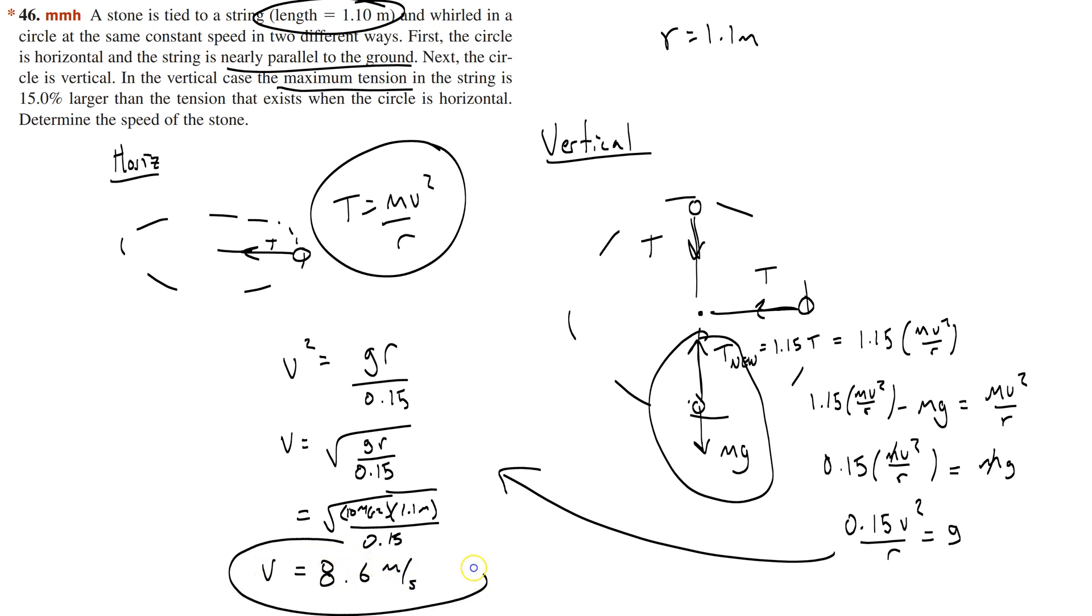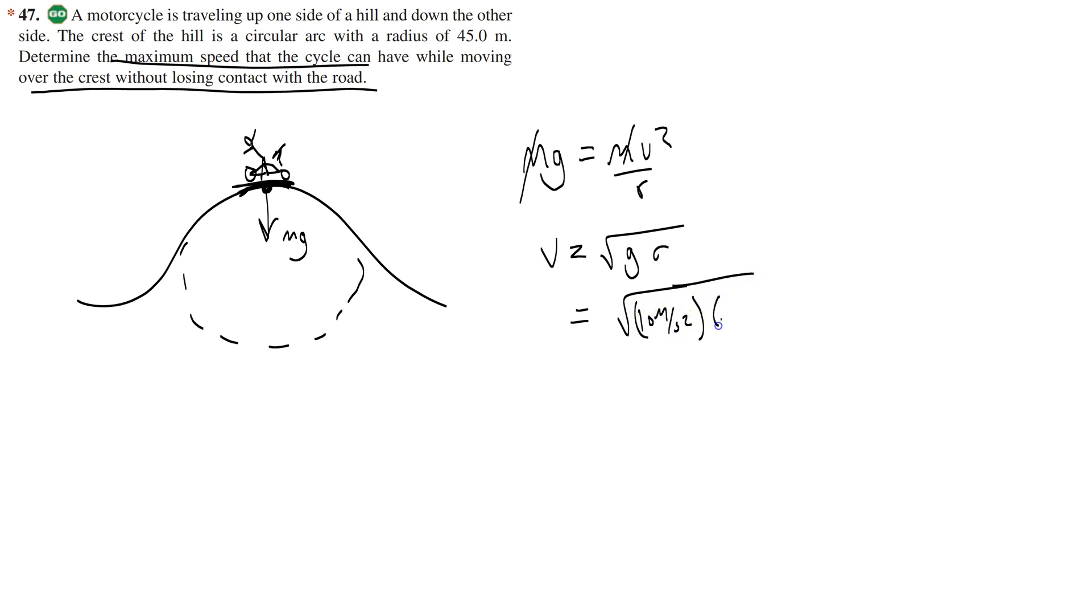All right let's do one more okay so 47 motorcycle traveling up the side of the hill down the other. Hopefully you were able to solve this one it's just like the example that we did together. You want to find the maximum speed while moving over the crest without losing contact to the road so you imagine a circle underneath of the road. Here's the motorcyclist they're having a great time of course they're in contact with the road. Here you are motorcycle yay motorcycles so much fun. So basically this problem is telling you that the weight is your centripetal force so you should say mg equals mv squared over r you get rid of the mass and you get that the velocity is the square root of or the square root of 10 meters per second squared times the radius of 45 meters which gives you about 21.2 meters per second.